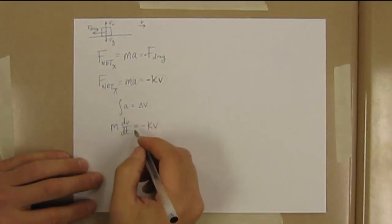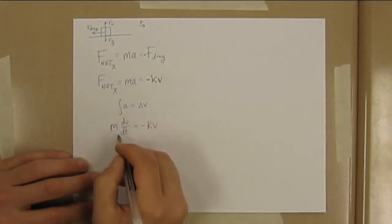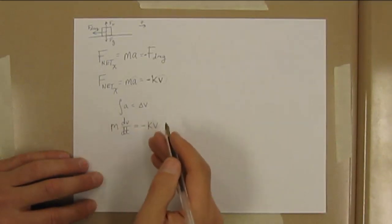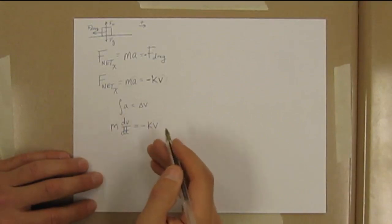To do an integral, if we did an integral right now, we'd be integrating on velocity here and time, and we can't integrate two different things in the same integral.